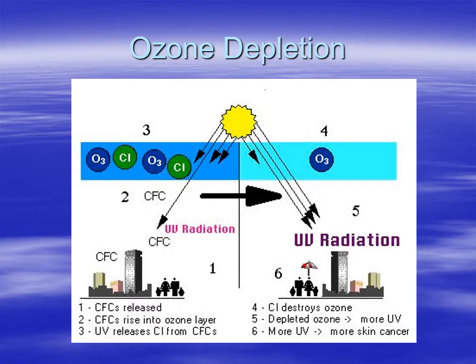Some of the first refrigerants were actually other chemicals. For example, ammonia does the same kind of thing — you can squeeze ammonia into a liquid, and then when it evaporates, it cools off. Propane is also the same way. It's pretty easy to squeeze into a liquid, and then when it evaporates, it cools off. If you've got a propane grill, you can feel the tank, and where it's cold is where the propane is still liquid and evaporating.